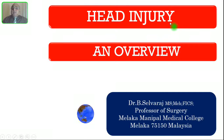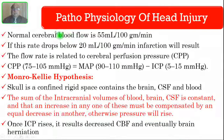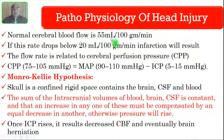Almost 50% of the deaths in trauma patients are due to head injury. I am not going to talk elaborately, but I have included the essential minimum an undergraduate medical student should know. The pathophysiology of head injury: the normal cerebral blood flow is 55 ml per 100 gram of brain tissue per minute. If this drops to 20 ml per minute, infarction will result.